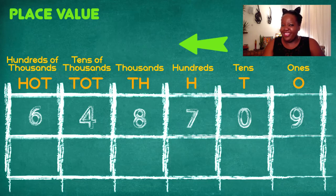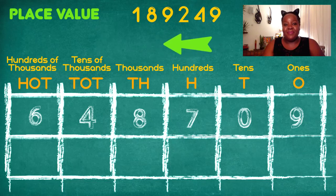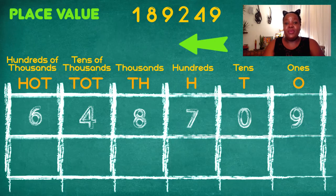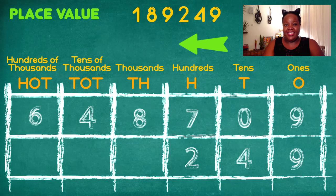Let's take another number: one hundred and eighty-nine thousand, two hundred and forty-nine. I want us to place each digit in the correct value box. Remember, we always plot the numbers from right to left. In this number each digit has a unique position. Starting from the right: nine in the ones, four in the tens, two in the hundreds, nine in the thousands, eight in the tens of thousands, and one in the hundreds of thousands.